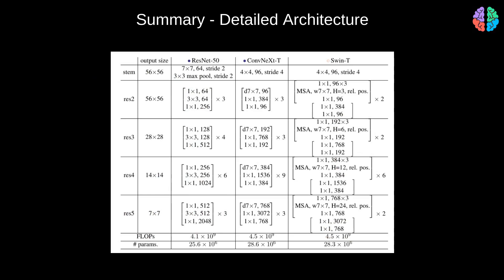To summarize the ConvNeXt architecture: a 4×4 convolution with stride 4 for the stem stage to extract patches similar to transformers; depthwise convolutions with a hidden stage 4× the input width forming an inverted bottleneck; a stage ratio of 1:1:9:1 instead of 3:4:6:3 as in ResNets; plus micro design changes like layer normalization and GELU. During training, different augmentation and regularization techniques are used along with the AdamW optimizer.